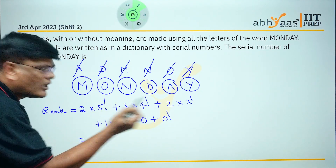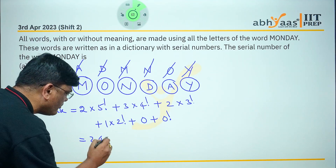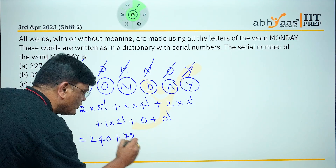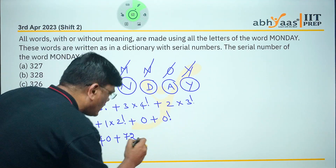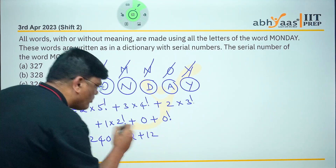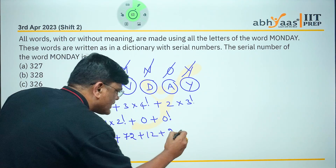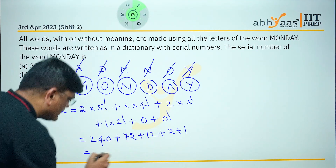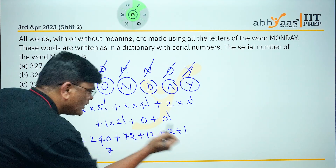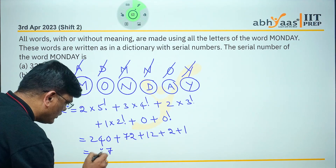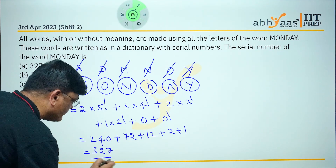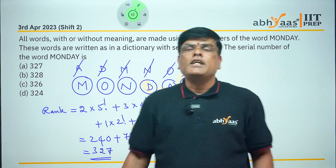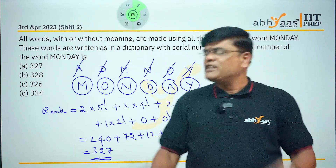After simplification: 5! = 120, so 2 × 120 = 240. Next, 4! = 24, so 3 × 24 = 72. Then 3! = 6, so 2 × 6 = 12. Then 1 × 2! = 2. Then 0 × 1! = 0. Then 0! = 1. Adding: 240 + 72 + 12 + 2 + 0 + 1 = 327. So the rank of the word MONDAY is 327.